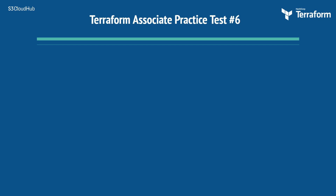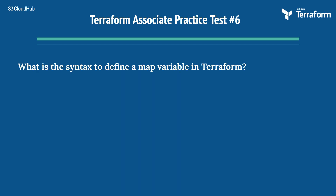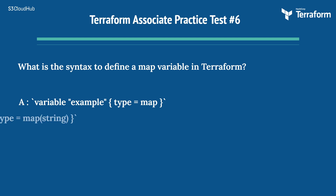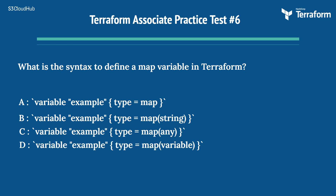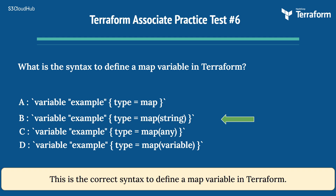The sixth question: what is the syntax to define a map variable in Terraform? Options are: A) variable example, type = map, B) variable example, type = map(string), C) variable example, type = map(any), D) variable example, type = map(variable). The right answer is Option B, variable example type = map(string). This is the correct syntax to define a map variable in Terraform.